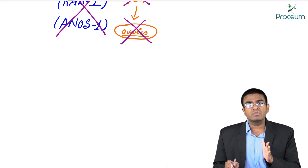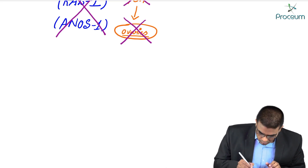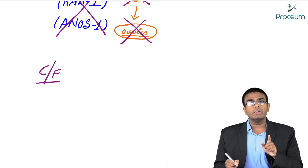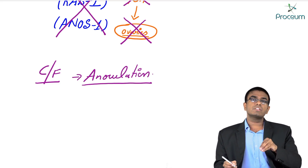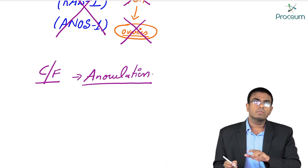Can such a female have normal menstrual cycles? No. Clinical features: the first clinical feature is anovulation. Because there are no gonadotropic hormones and no FSH, there is no stimulation and no ovulation.